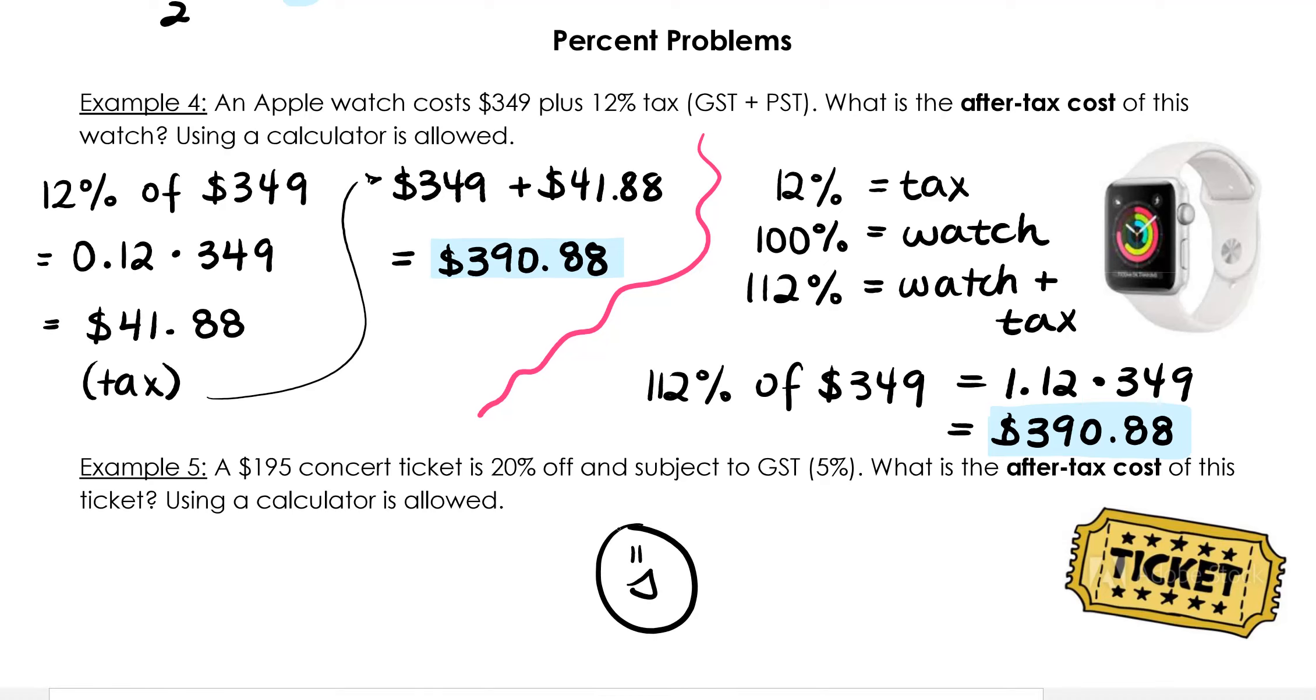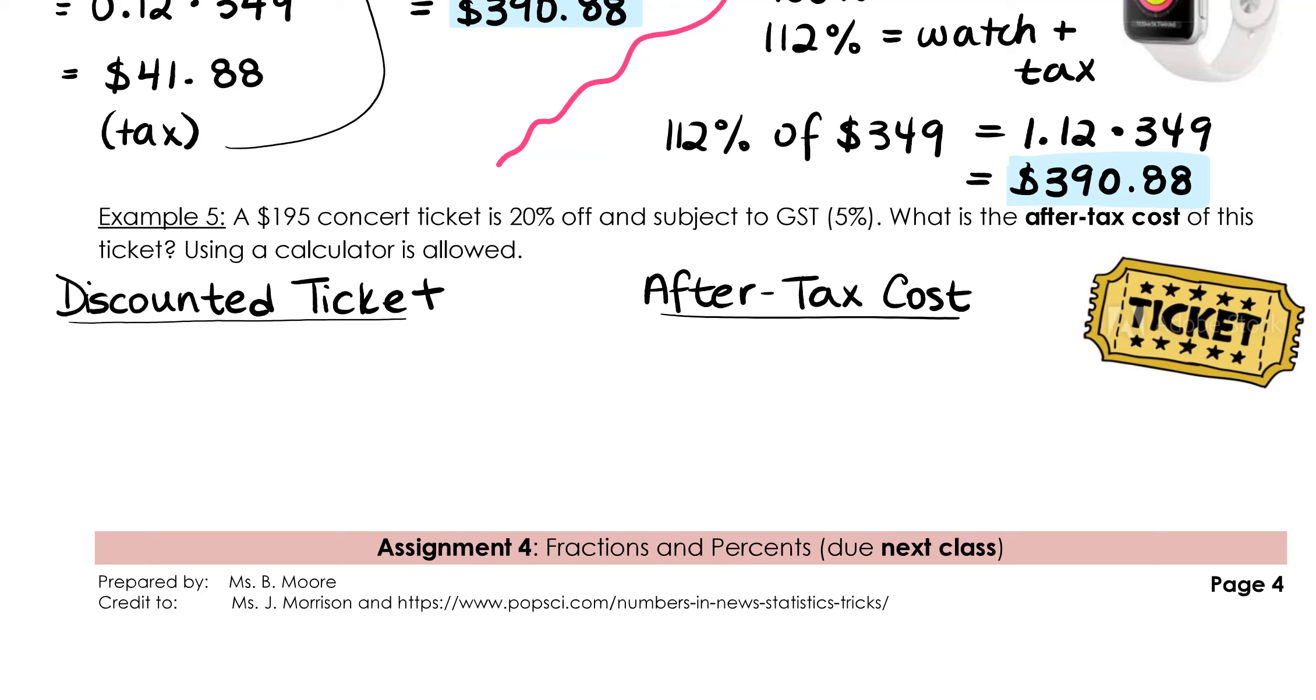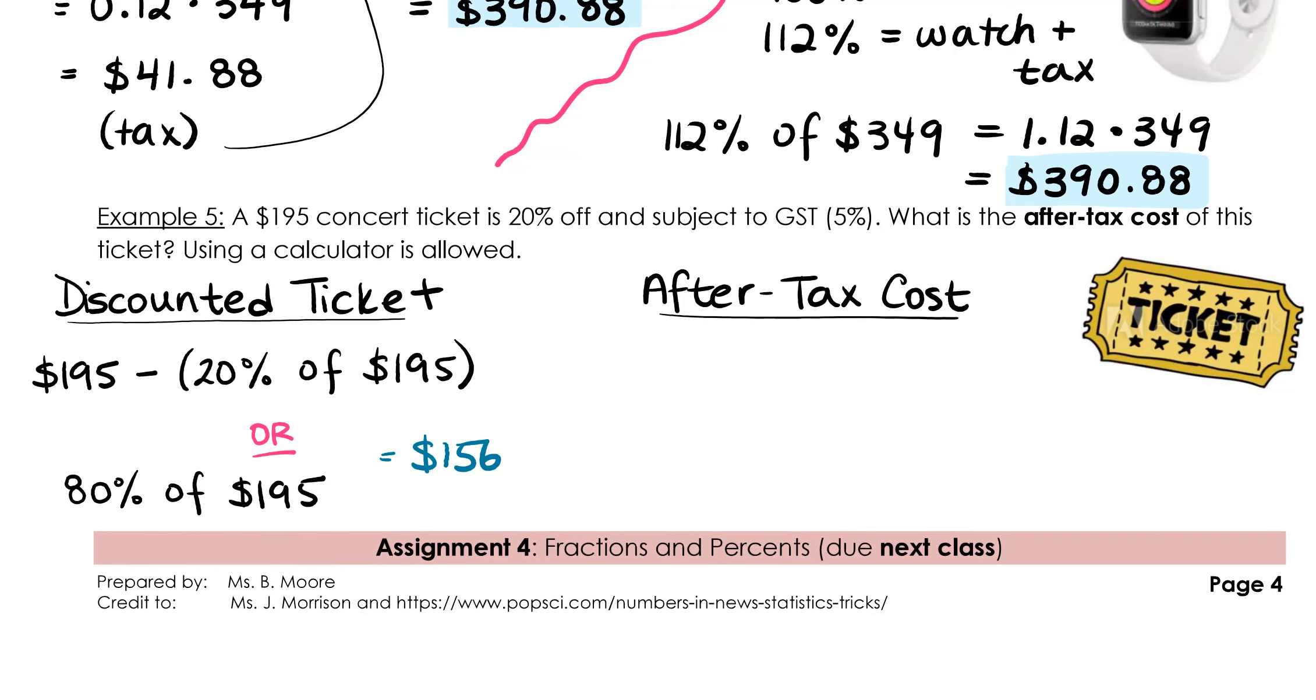Please pause the video here while you try the concert example on your own. There are two parts to solving this problem. First, we have to determine the cost of the discounted ticket, and then we have to apply tax to that cost. There's two ways to find the discounted ticket price. You can either take the original ticket value of $195 and subtract the 20% discount, or you can observe that 100% of the ticket cost has now become 80% of the original cost. So 80% of $195 will give you $156. To find the after-tax cost, there's also two ways of doing it. You can either take the 5% tax and add it to $156, or you can observe that together the tax and the ticket total 105% of the base ticket cost. So 105% of $156 is $163.80.